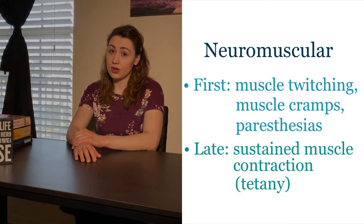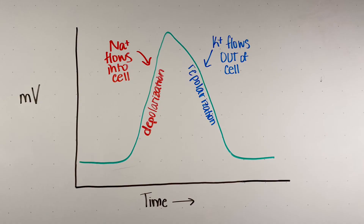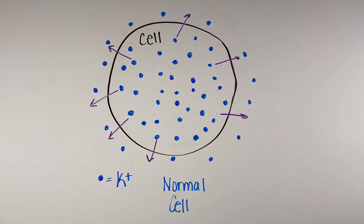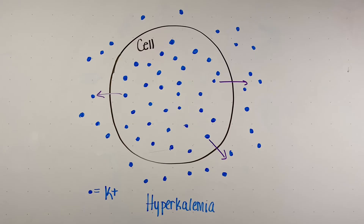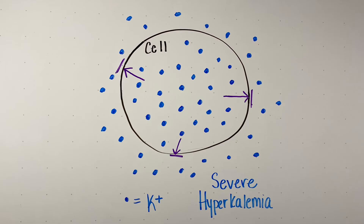However, as blood potassium levels increase to dangerously high levels, sustained muscle contraction can occur. As part of the repolarization phase of an action potential, potassium needs to be able to leave the cell — in muscle cells, repolarization equals relaxation. In a normal cell, potassium leaves no problem, but in hyperkalemia there is extra potassium outside the cell, ruining the concentration gradient so potassium cannot leave as easily. As potassium grows to dangerously high levels, the cell will not relax, causing sustained muscle contraction, which we call tetany.